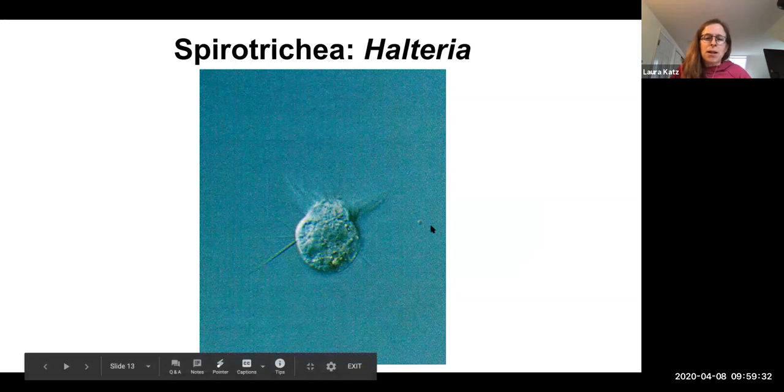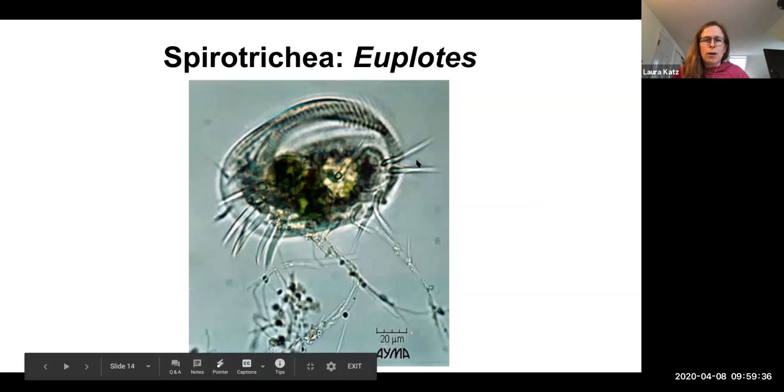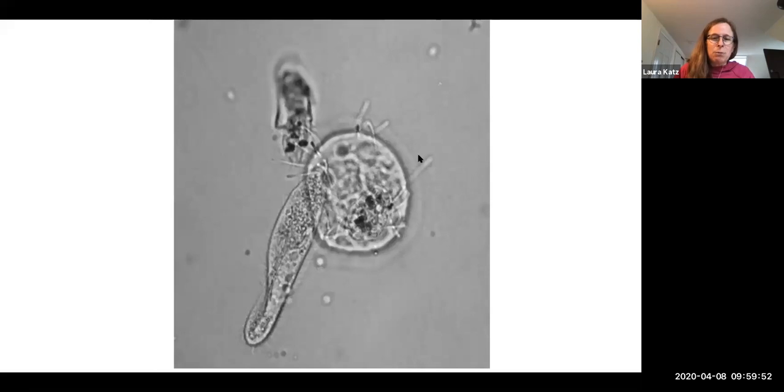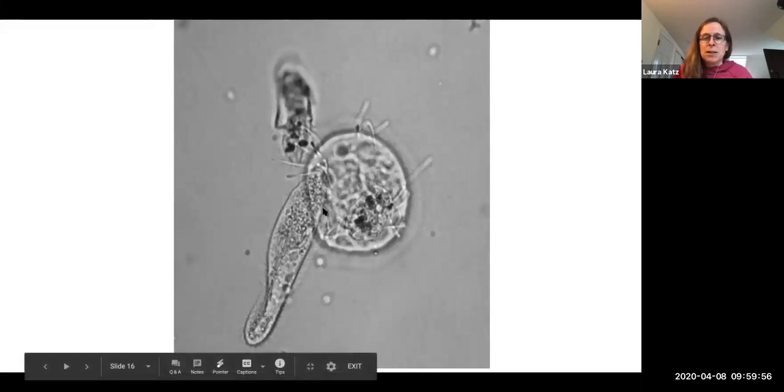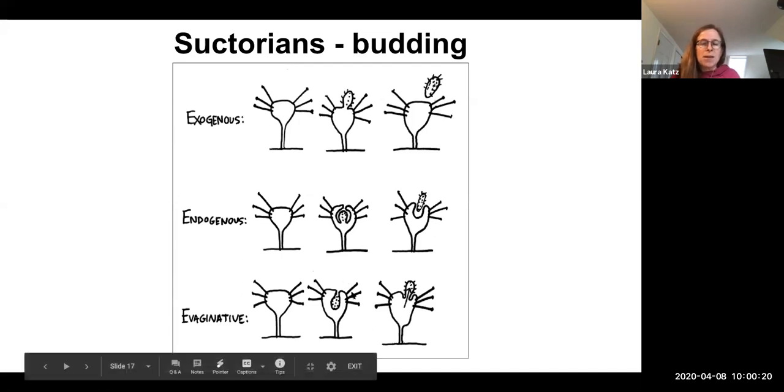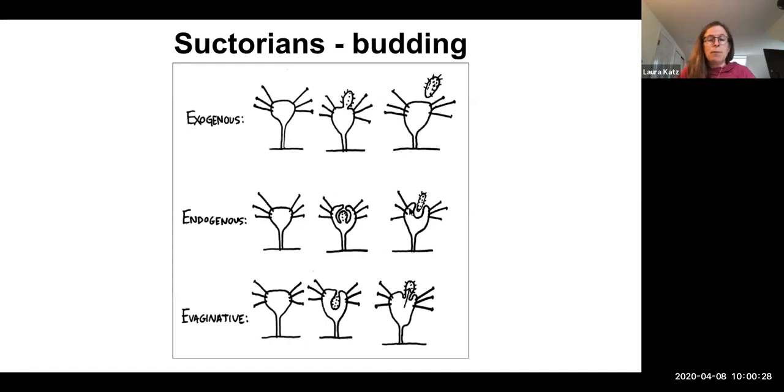Other beautiful ciliates we've seen in lab: halteria, which hops through the water, euplotes, which can crawl on top of the water with these bundles of cilia called cirri, and then there's these suctorians, which actually have no cilia as adults. They are tentacled as adults, but they actually give live birth to ciliated embryos. These are also voracious predators. They use these tentacles to poke holes in these paramecium and suck the inside out and spit out the little outside of the paramecium. These guys give live birth in one of three ways.